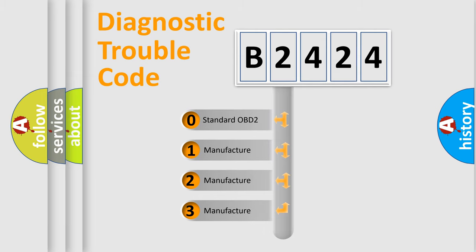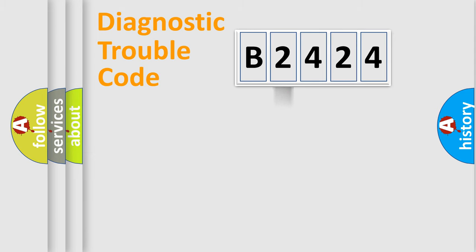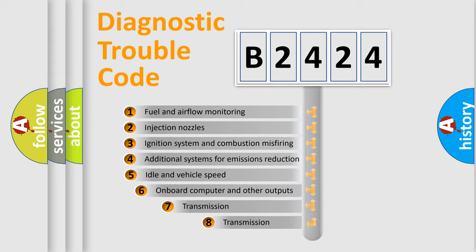If the second character is expressed as zero, it is a standardized error. In the case of numbers 1, 2, 3, it is a manufacturer-specific expression of the car-specific error.